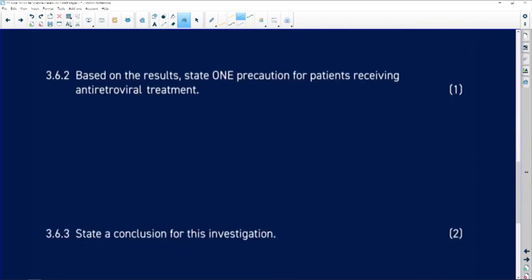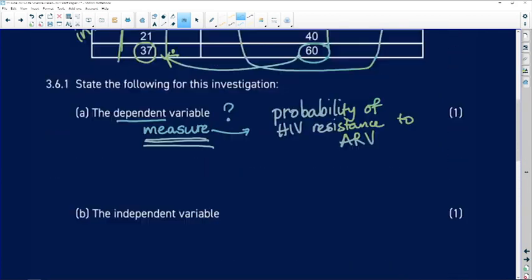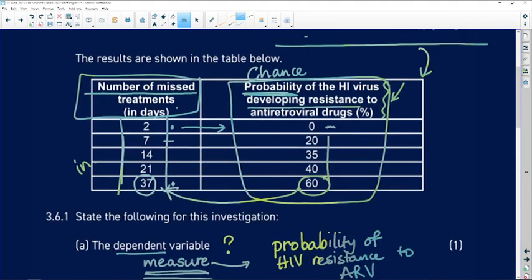Based on the results, state one precaution for patients receiving antiretroviral treatment. What would be, if these are our results, what would be one thing that doctors would emphasize with patients? Great, you're starting antiretroviral treatment now, the one thing you must not do, miss your dose. Because the more opportunities or the more occasions that you miss that dose,